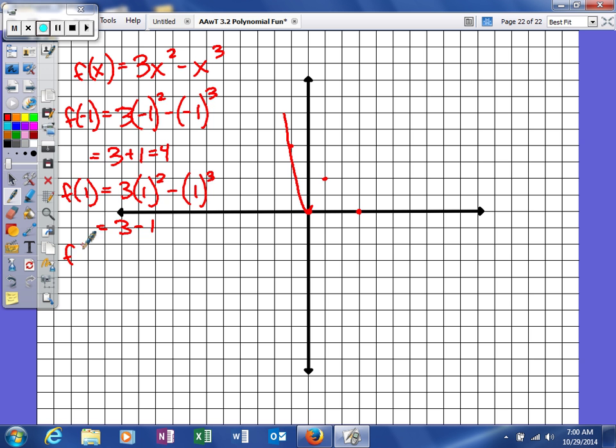And we'll plug in two real quick. So three times two squared minus two cubed. So that'll be four times three is 12. And then minus eight. So that will also give me a value of four. One, two, three, four.